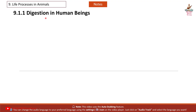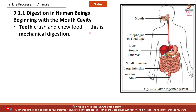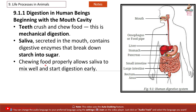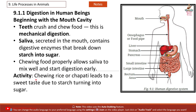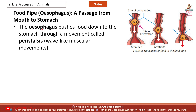Section 9.1.1: Digestion in Human Beings. Beginning with the mouth cavity, teeth crush and chew food — this is mechanical digestion. Saliva, secreted in the mouth, contains digestive enzymes that break down starch into sugar. Chewing food properly allows saliva to mix well and start digestion early. An activity shows that chewing rice or chapati leads to a sweet taste due to starch turning into sugar. Next is the food pipe, or oesophagus — a passage from the mouth to the stomach. The oesophagus pushes food down through a movement called peristalsis: wave-like muscular movements.